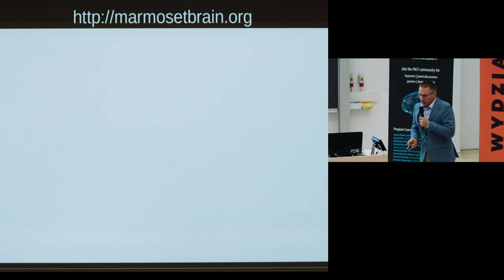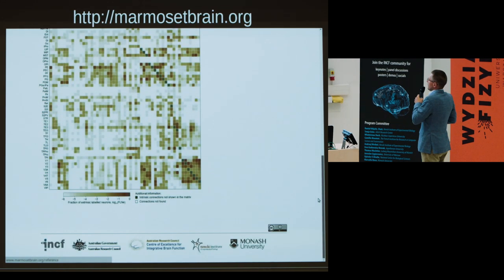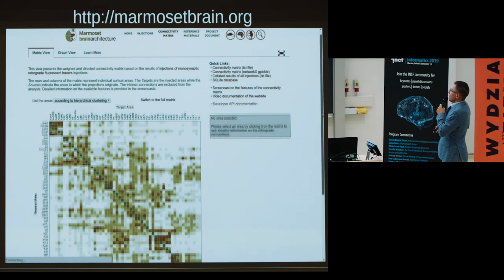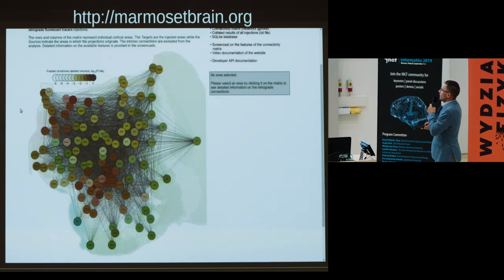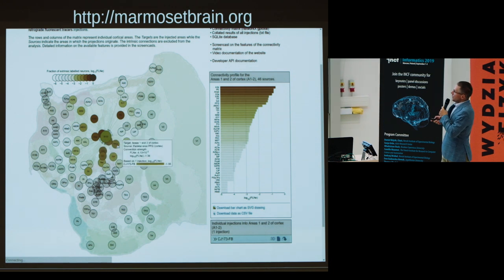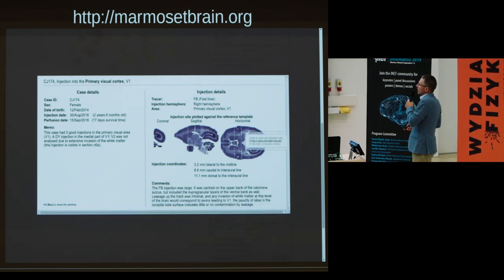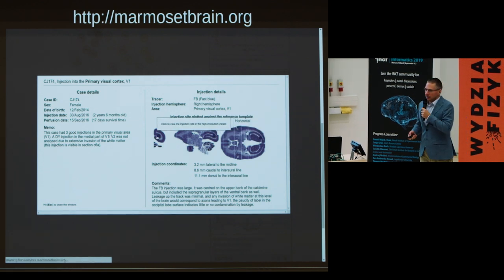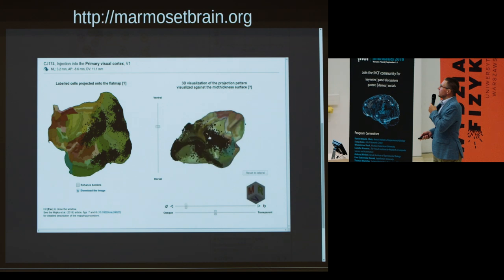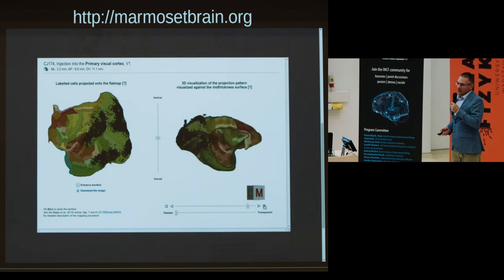The portal also provides access to the connectivity matrix, which you can explore down to the smallest detail and customize to suit your interests. There is an alternative graph view to better appreciate the spatial distribution of projections. Each case comes with an extensive set of metadata, including personal comments from the neuroanatomist who conducted the surgeries. There is also a widget where you can grab the brain, spin it around, and enjoy the view. I highly encourage you to go online and check out this portal.